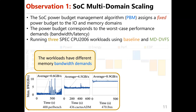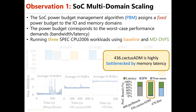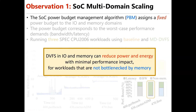A close look into the bandwidth demand of the three workloads shows that the workloads have different memory bandwidth demands. A close look into the latency demand reveals that the second workload is highly bottlenecked by memory latency. We conclude that DVFS in the IO and the memory can reduce power and energy with minimal performance impact on workloads that are not bottlenecked by memory.